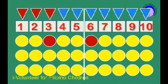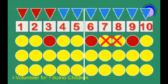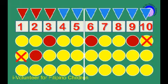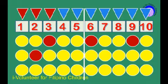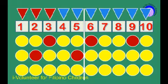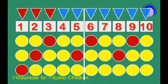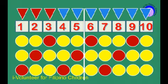Let's continue counting by threes. And the next number is nine. Let's skip two numbers. The next number is twelve. Now we have three, six, nine, and twelve. What's next? The next number is fifteen, eighteen, twenty-one, twenty-four, twenty-seven, and thirty.